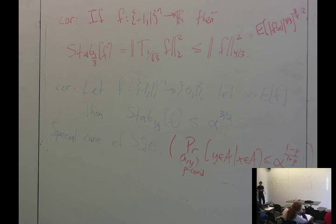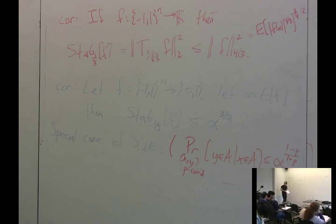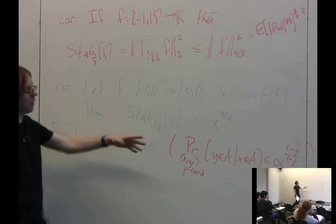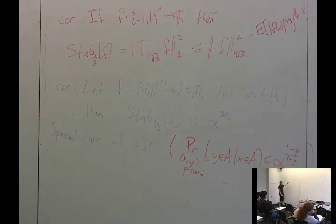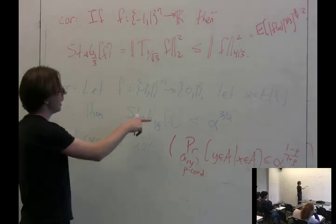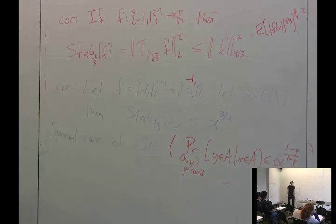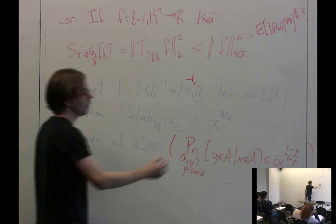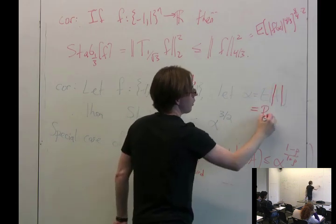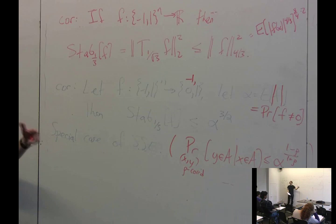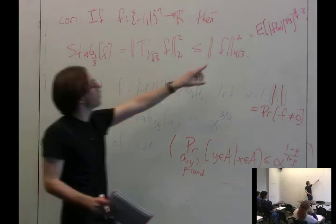This corollary extends to functions mapping into {-1, 0, 1} if we let α = E[|f|], i.e., the probability that f ≠ 0. If f sometimes takes value -1 instead of 1, nothing changes because the first step on the right-hand side takes absolute value.